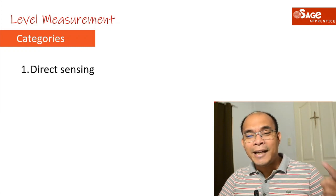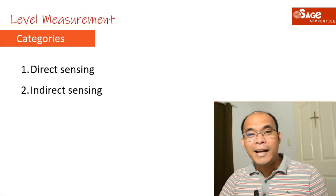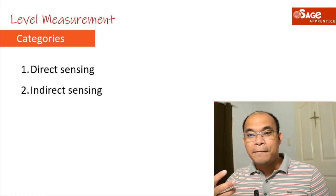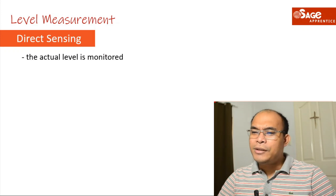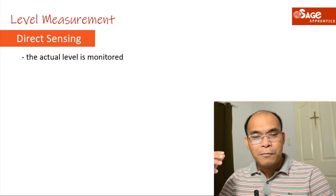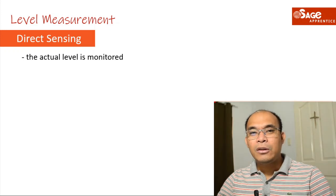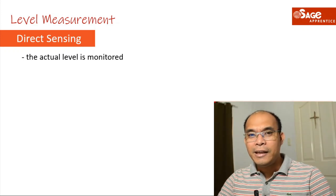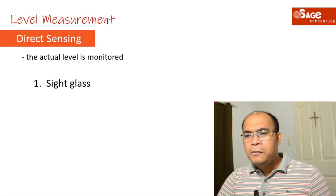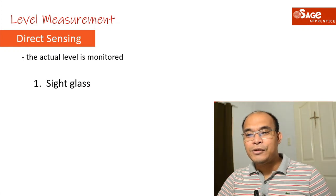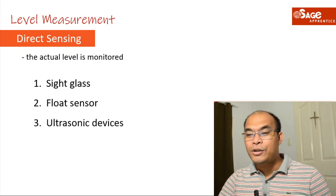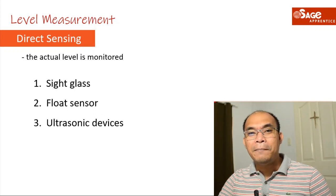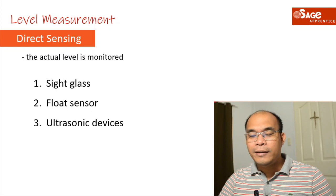Let's start with the categories of level measuring devices. There are two common categories: number one, direct sensing, and number two, indirect or inferential sensing. In direct sensing, the actual level itself is monitored — for example, the water, solid, or liquid material inside the tank. Direct sensing devices include: sight glass, float sensor, and ultrasonic devices.